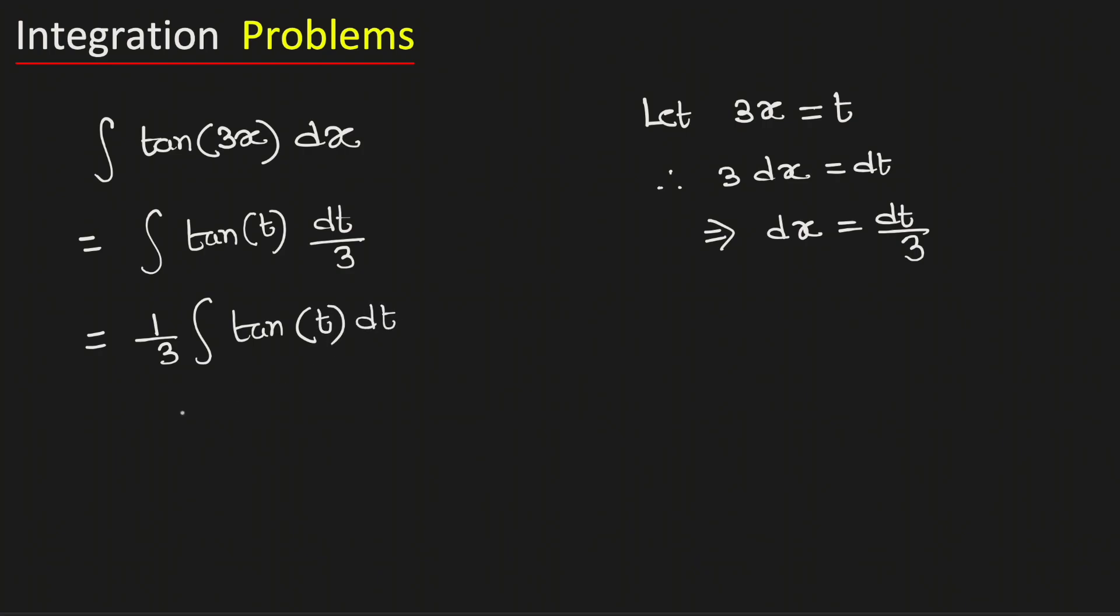We know that the integral of tan(t) equals negative ln of cos(t) plus the integral constant C.